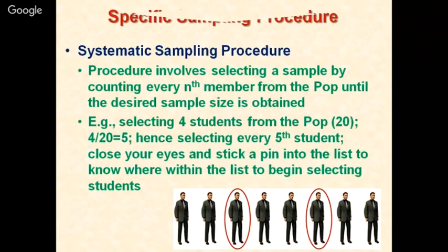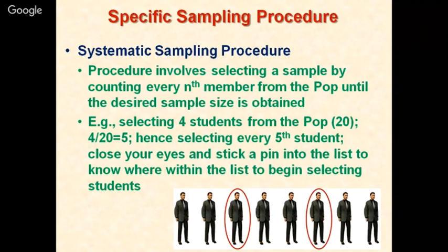Systematic random sampling procedure involves selecting a sample by counting every nth member from the population until the desired sample size is obtained. For example, to select 4 students out of 20: 20 ÷ 4 = 5, so select every 5th student. Close your eyes and stick a pin into the list to find the starting point — say number 7. Then select 7, 12, 17, and so on, adding 5 each time, returning to the top of the list if the end is reached before the sample size is complete.